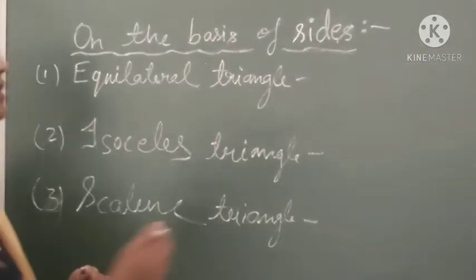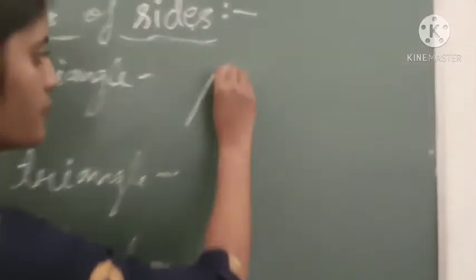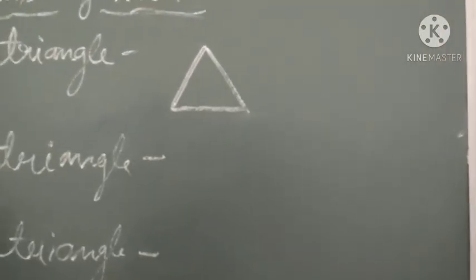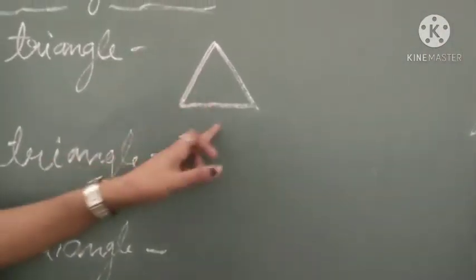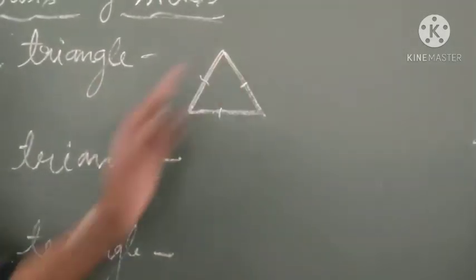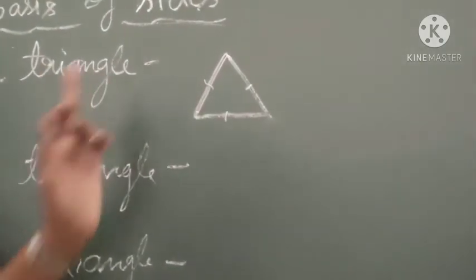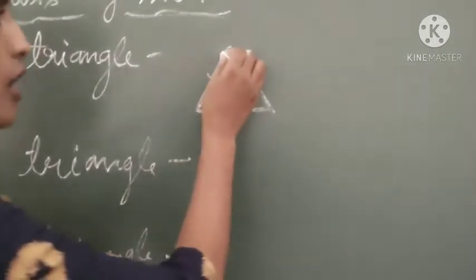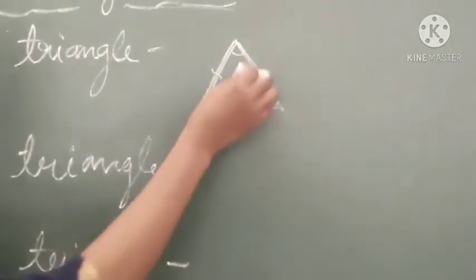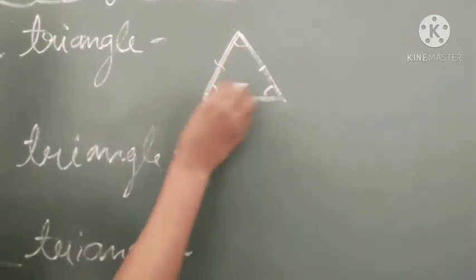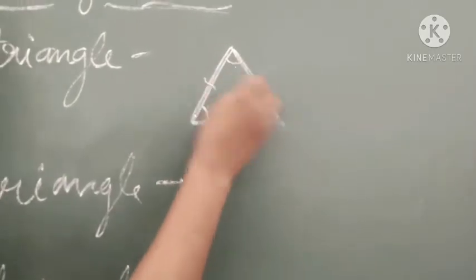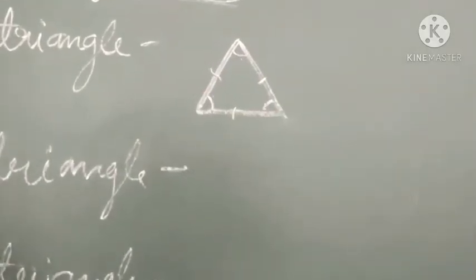What is an equilateral triangle? A triangle whose 3 sides are all equal is known as an equilateral triangle. And of course, the angles are also equal. One important property is that the sum of all 3 angles of a triangle must equal 180 degrees.